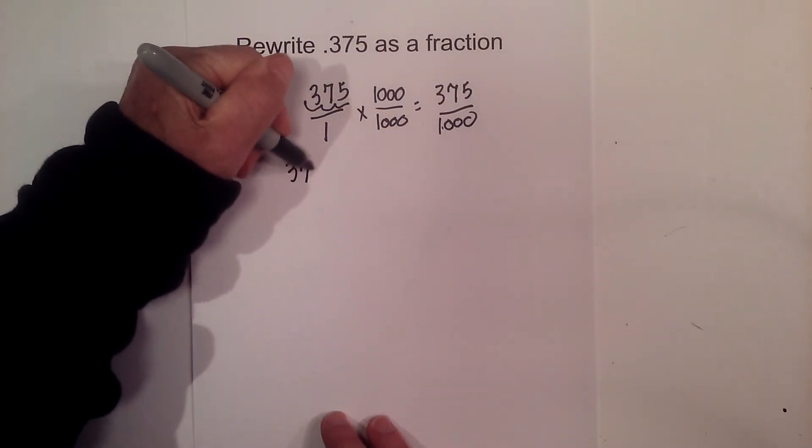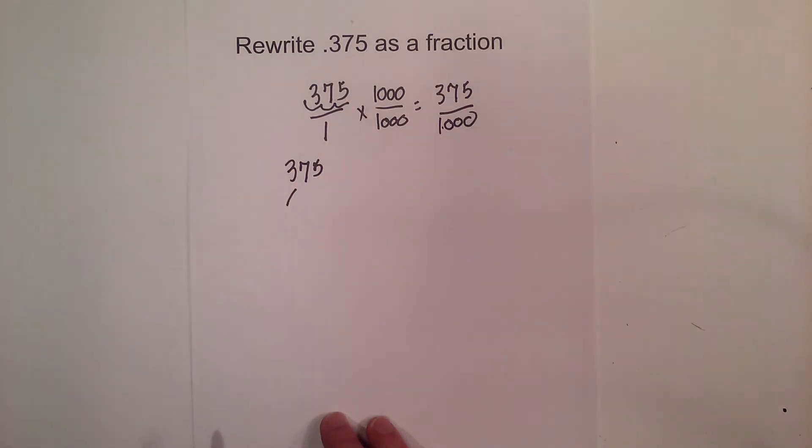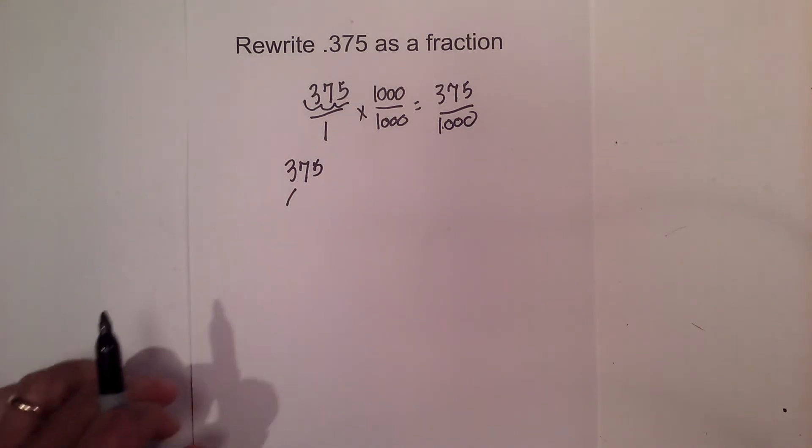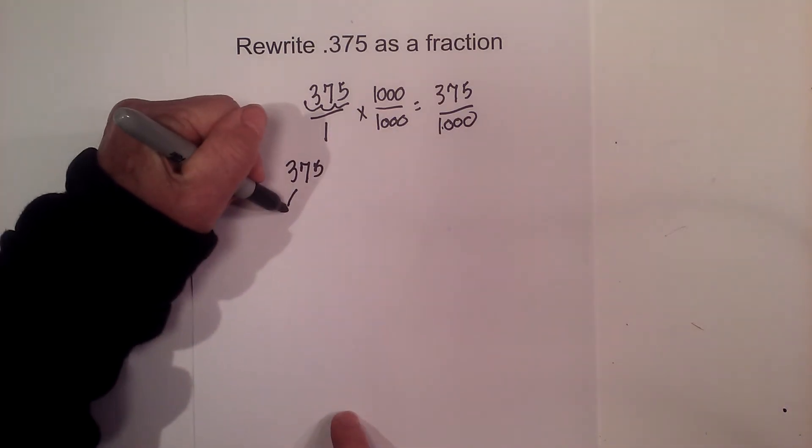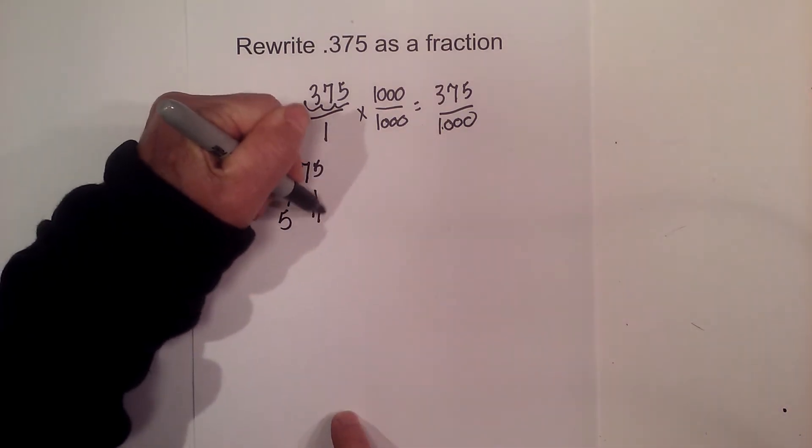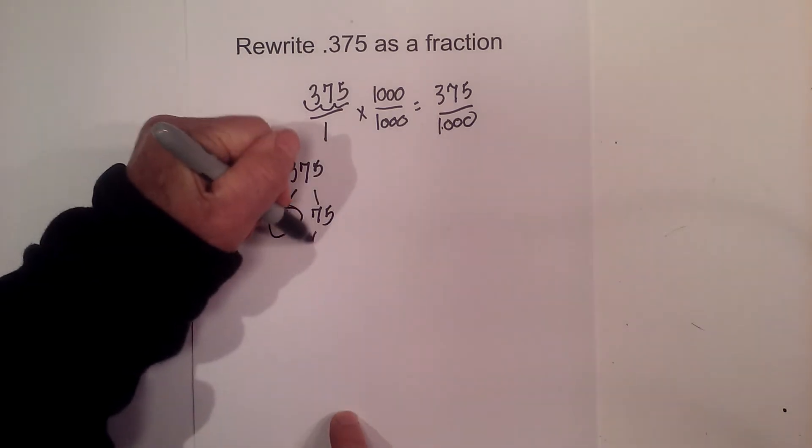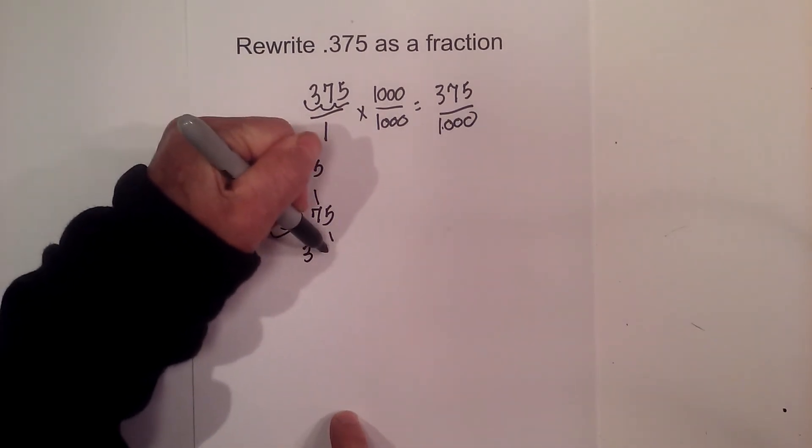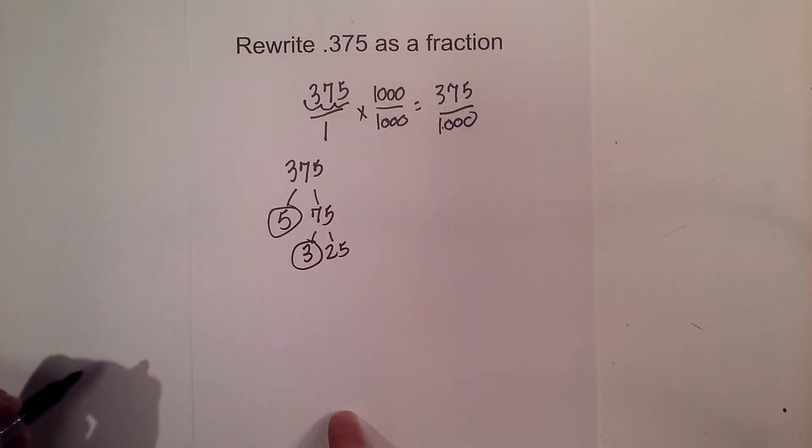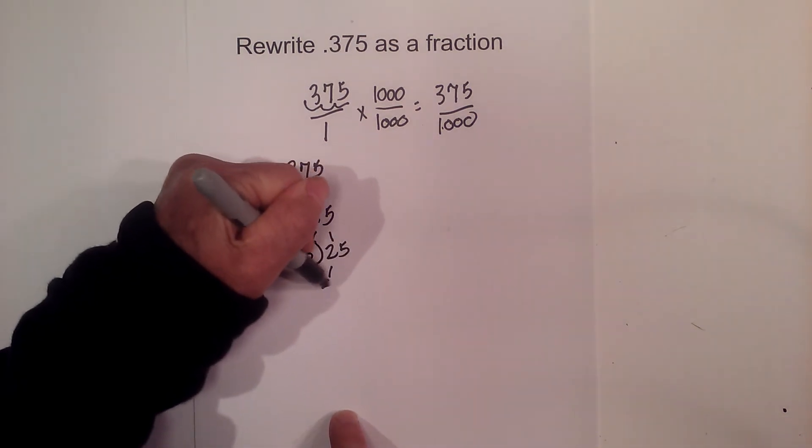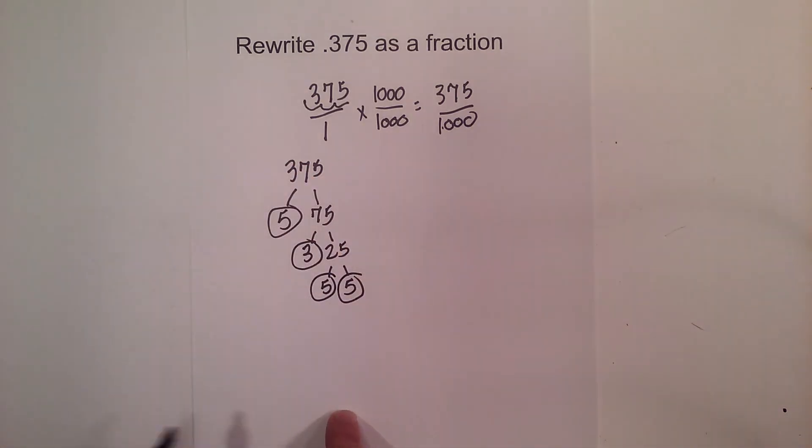So I like to use a factor tree. I'm going to begin with a factor tree for 375. And so since it ends in 5, I know I can go 5 times 75 equals 375. Circle the 5 because it is prime.